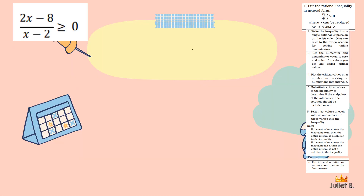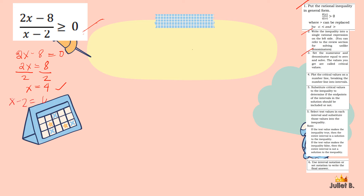Next example: 2x minus 8 over x minus 2 is greater than or equal to 0. Step 1: it is already in general form. Step 2: it is already a single rational expression. Step 3: set numerator and denominator equal to 0. Setting 2x minus 8 equals 0 gives x equals 4. Setting x minus 2 equals 0 gives x equals 2. These are the two critical points.